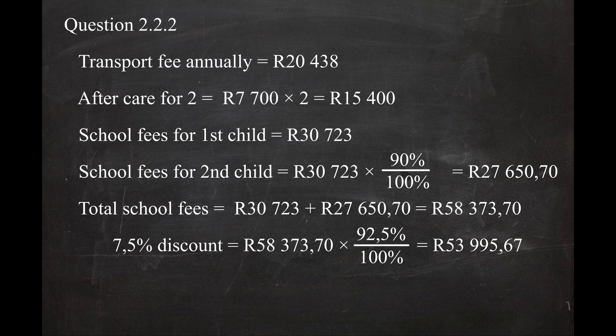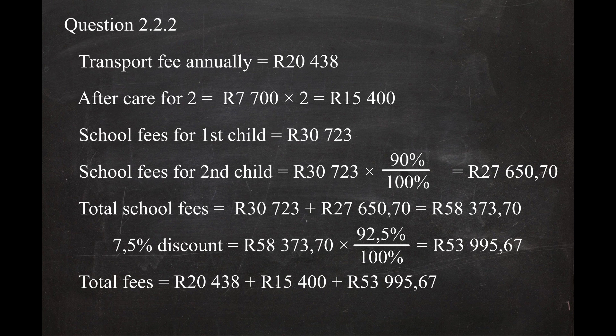So the total fees for the twins will be the sum of all charges: 20,438 Rand (transport) plus 15,400 Rand (aftercare) plus 53,995 Rand 67 cents (school fees), and this equals a total of 89,833 Rand 67 cents for the year.